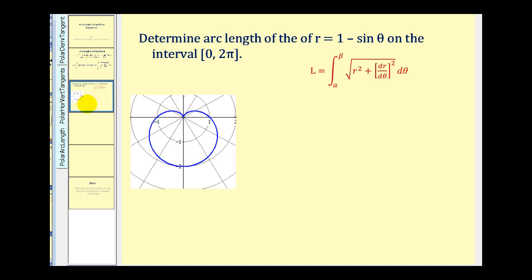Here we want to determine the arc length of r = 1 − sin θ, already graphed here, on the interval from zero to two pi. So we want to find the arc length of this entire curve.